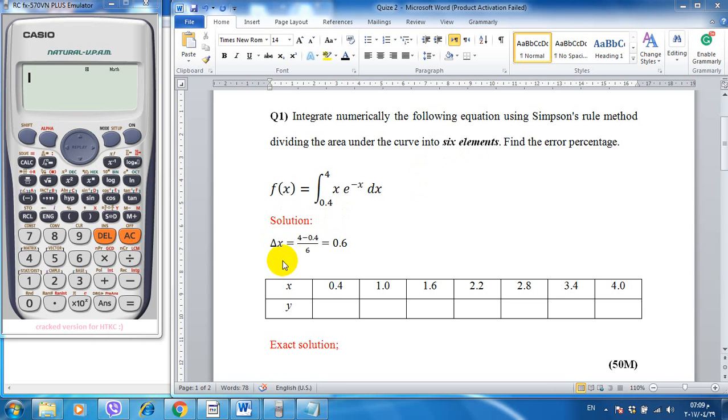...4 minus 0.4, upper limit minus lower limit, divided by six, the number of elements. Then we have 0.6, that means the distance of delta x.